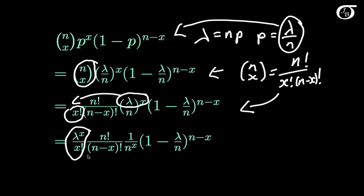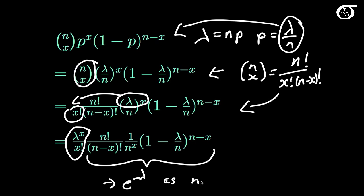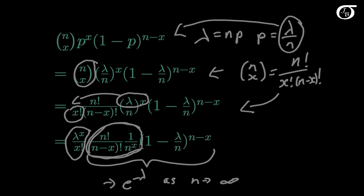Now all we need to show is that this remaining term tends to e to the minus lambda as n tends to infinity. So I'm going to do this in a few parts. First of all, let's look at this term — in the next slide I'm going to isolate it and we're going to look at that one.